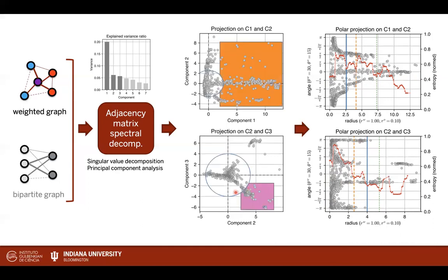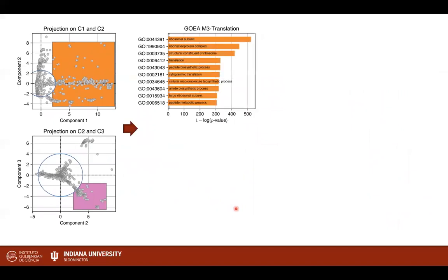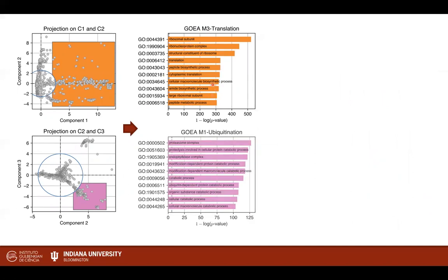Using this blue line as the definition of the origin, we can then define where are the actual modules. This is the orange module, and this is the pink module that's being defined. And we can then answer the question, are these modules biologically relevant? And we find that the orange module has to do with cell translation, and the pink module has to do with cell ubiquitination, two very prominent and well-defined processes in these cells.